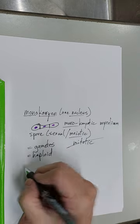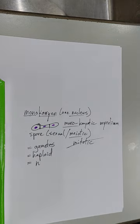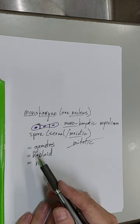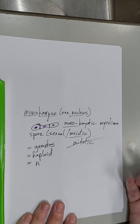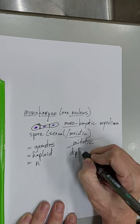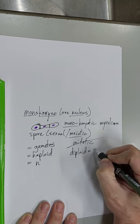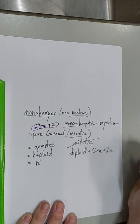Haploid, another way to write that equals N. N, so N is shorthand. N essentially means half of the normal diploid amount of genetic material. So if we are diploid, that's 2N. So 2 times N or just simply 2N.